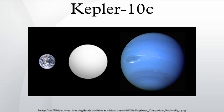The team confirmed the observation using data from NASA's Spitzer Space Telescope and a technique called Blender that ruled out most false positives. Kepler-10c was the third transiting planet to be confirmed statistically, after Kepler-9d and Kepler-11g. The Kepler team considers the statistical method that led to the discovery of Kepler-10c as what will be necessary to confirm many planets in Kepler's field of view.